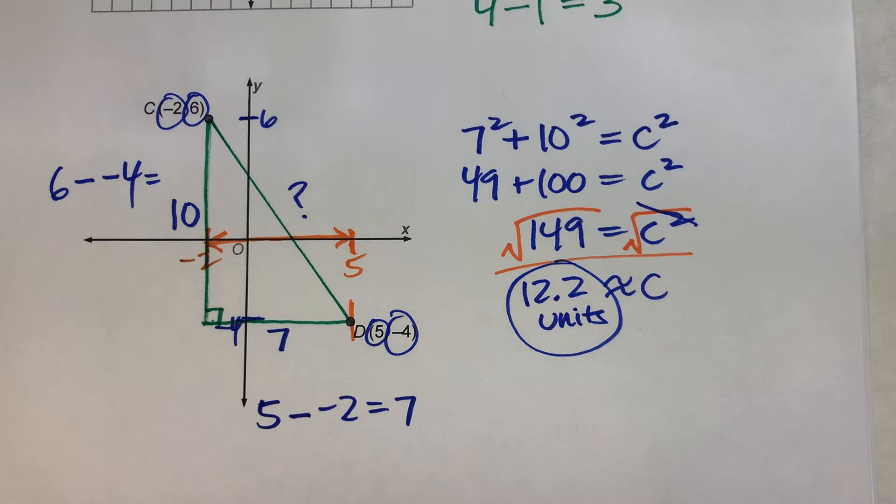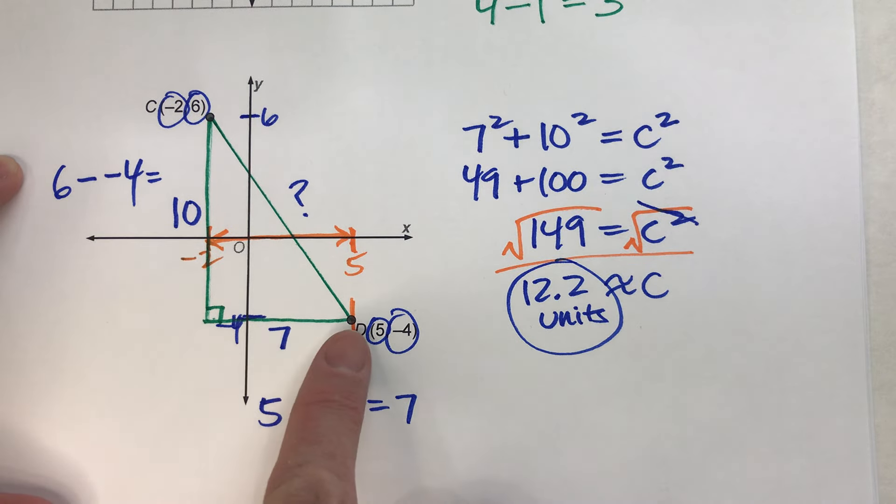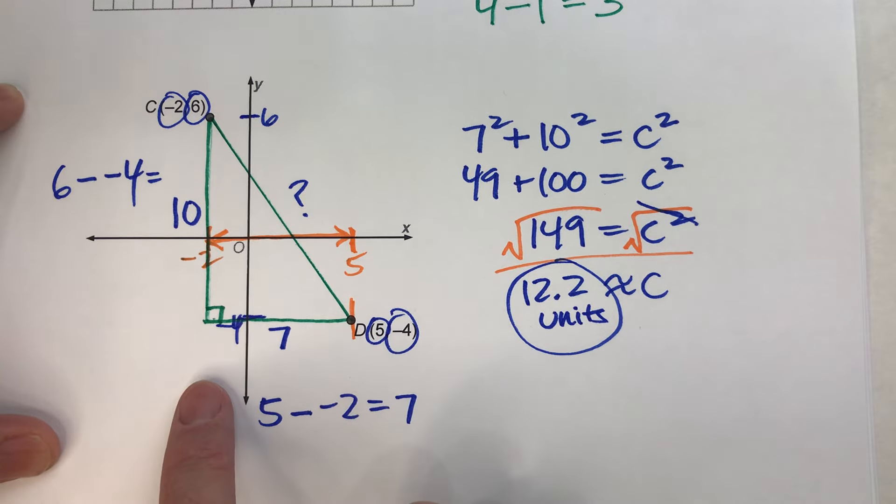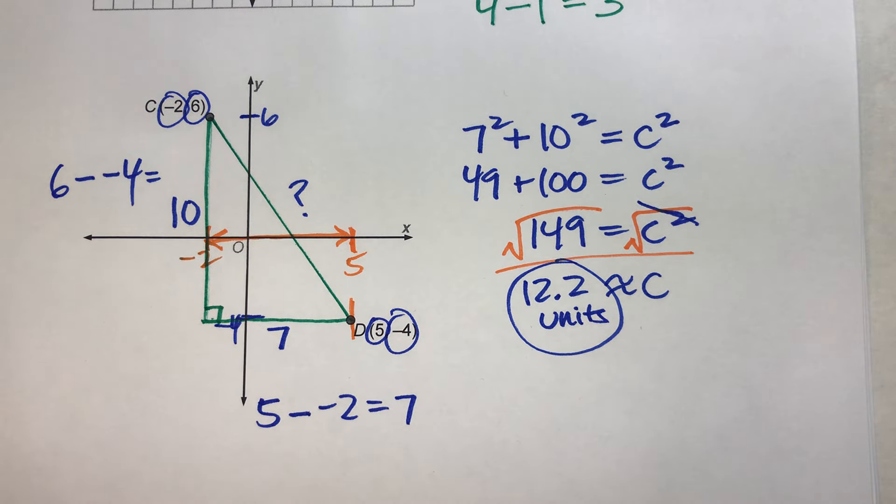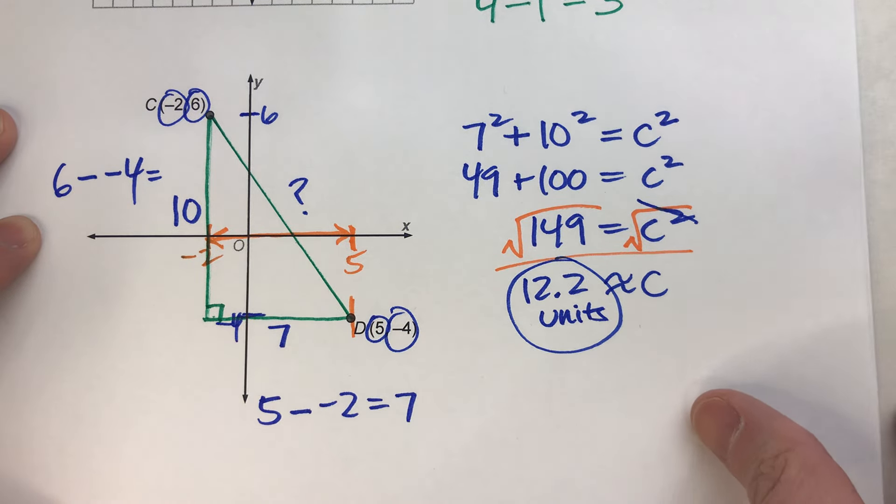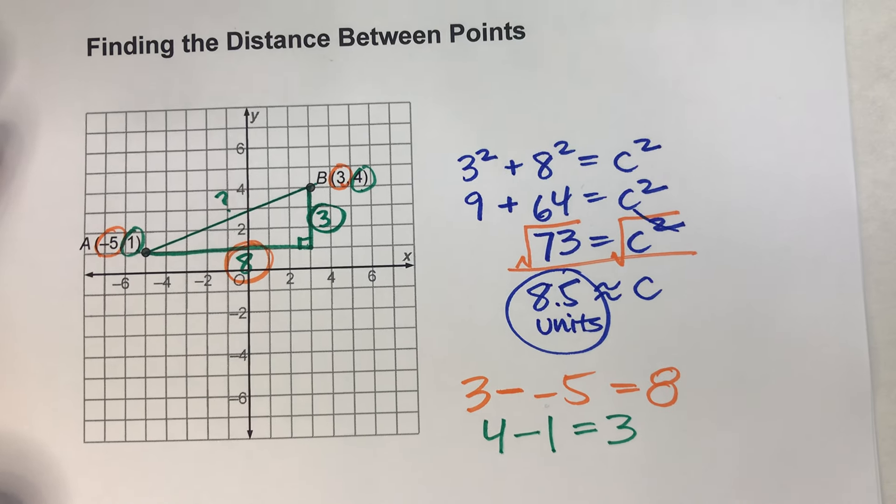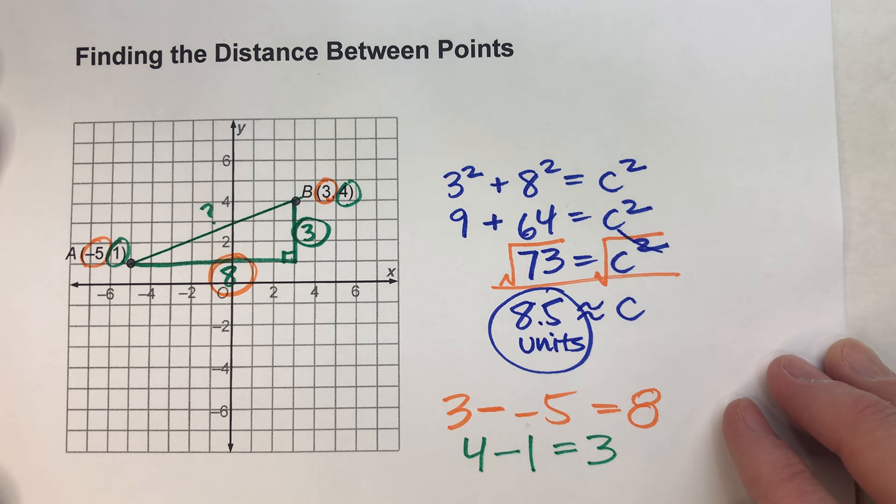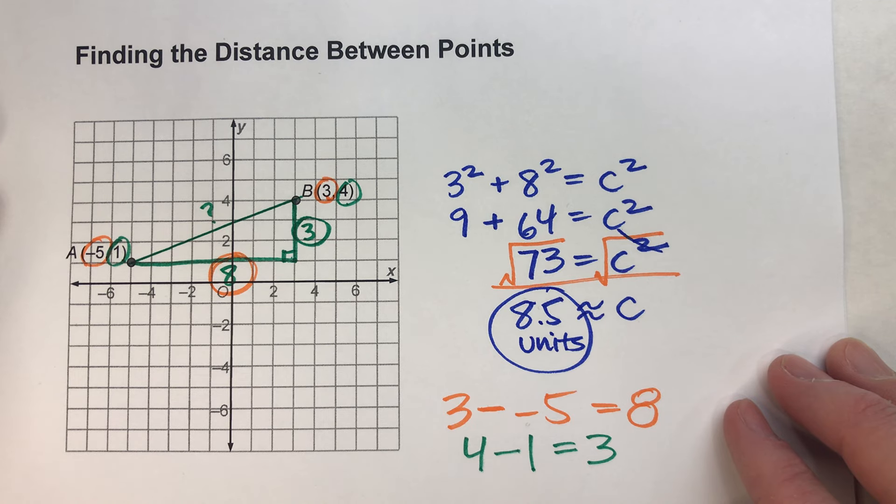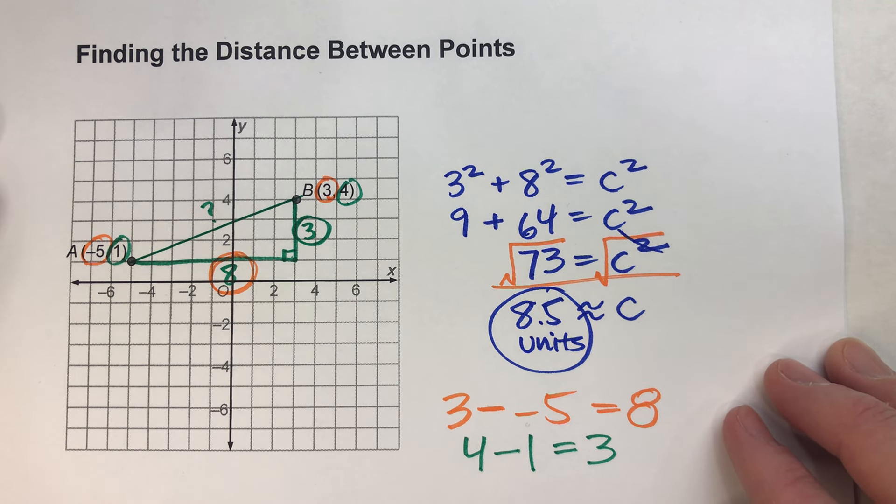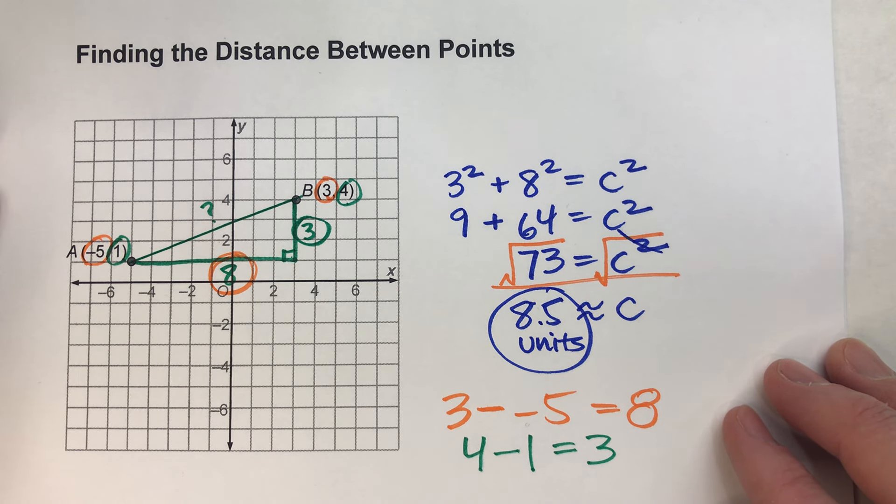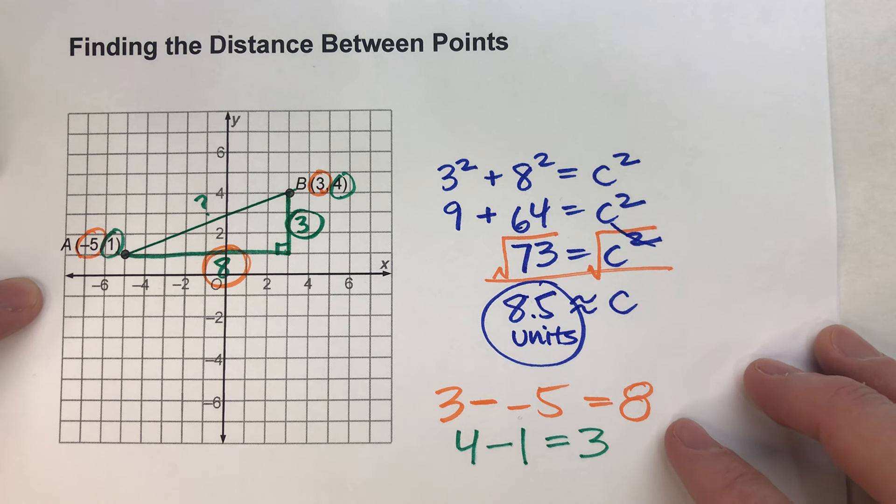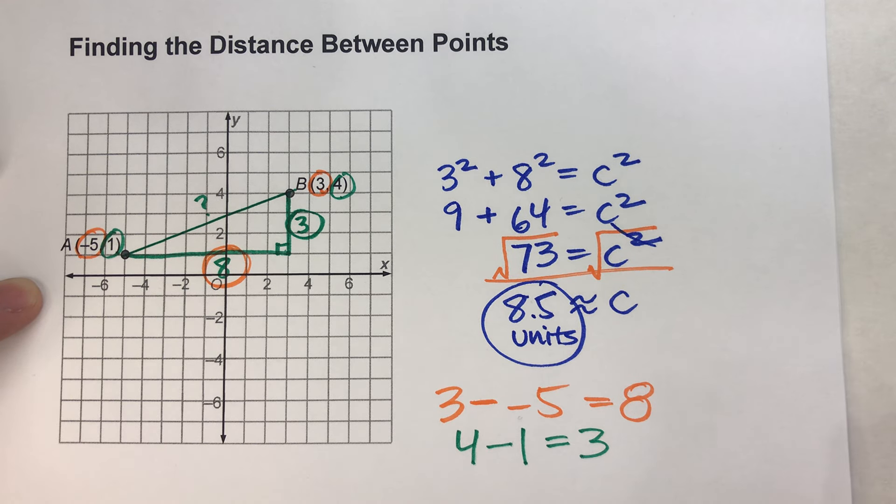So by subtracting your x-coordinates, you get your horizontal leg. When you subtract your y-coordinates, you get your vertical leg. So, it's a quick little trick so that you don't have to rely on counting squares. Of course, if you have the coordinate grid, counting the squares works just fine. But if you don't, you're going to have to do a little bit of subtraction. So hopefully you found this video helpful. If you did, please hit that like button. Also subscribe because it really helps us out. But with that being said, good luck on your math and we will see you next time.